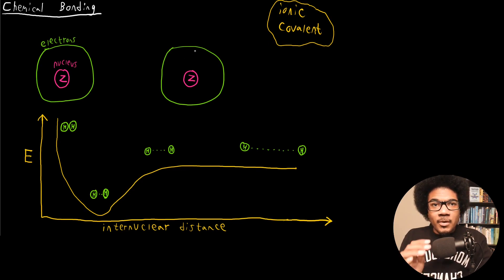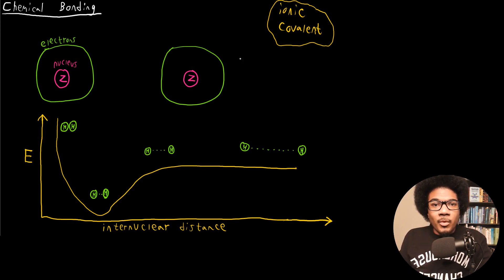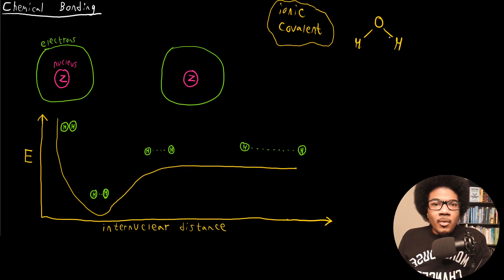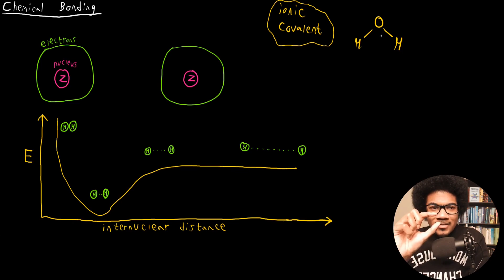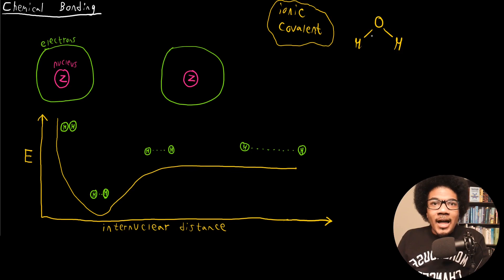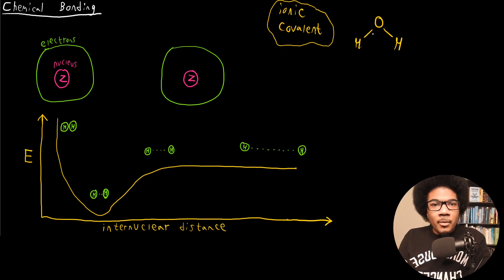What I really wanted to focus on in this video is just establishing what a chemical bond really is. If we draw a molecule like water, H2O, what we're doing is using a model — this is how we model the interactions of these different atoms. If you were to get a tiny, tiny microscope that you could view chemical bonds, you wouldn't see a line between two atoms where a bond is formed. This is just a model we use to show how forces interact between atoms and form molecules.